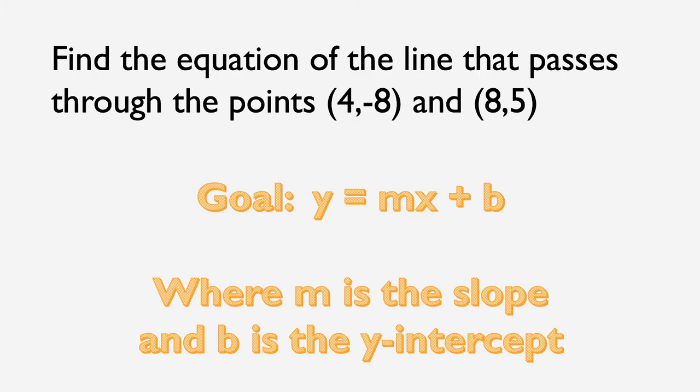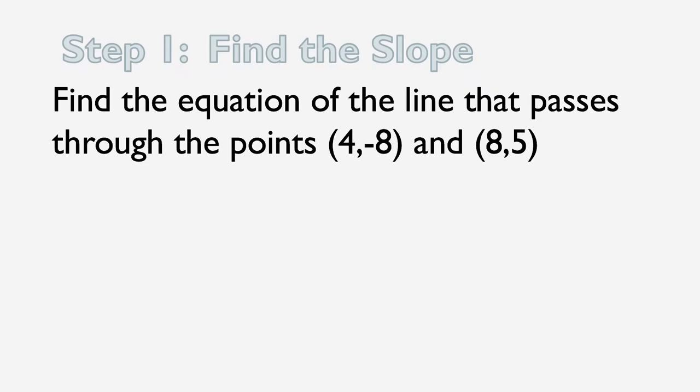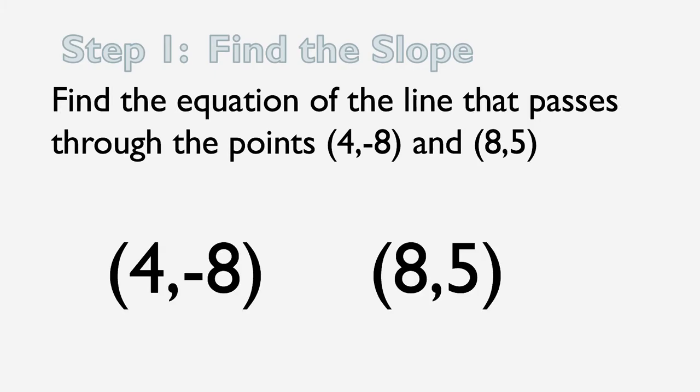So we're going to start by finding the slope. Because if we have two points, we can find the slope by finding the change in the y-coordinates and the change in the x-coordinates and then putting those in a fraction. So I rewrote the points a little bigger here. Let's look at the y-coordinates first. So from negative 8 to 5, it's rising 13. And a way you could do that is take the second y-coordinate, 5, and subtract the first y-coordinate, which is negative 8. So 5 minus negative 8 becomes 5 plus positive 8, and that's 13.